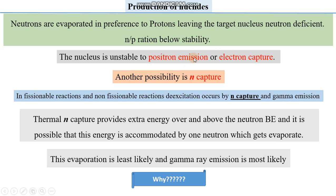Positron emission, as discussed in previous lectures, changes the atomic number of a nucleus. Electron capture is similar to pair annihilation, and positron emission will change the atomic number by one. If these processes occur more than once, the atomic number will change further. Another possibility besides positron emission and electron capture is neutron capture.